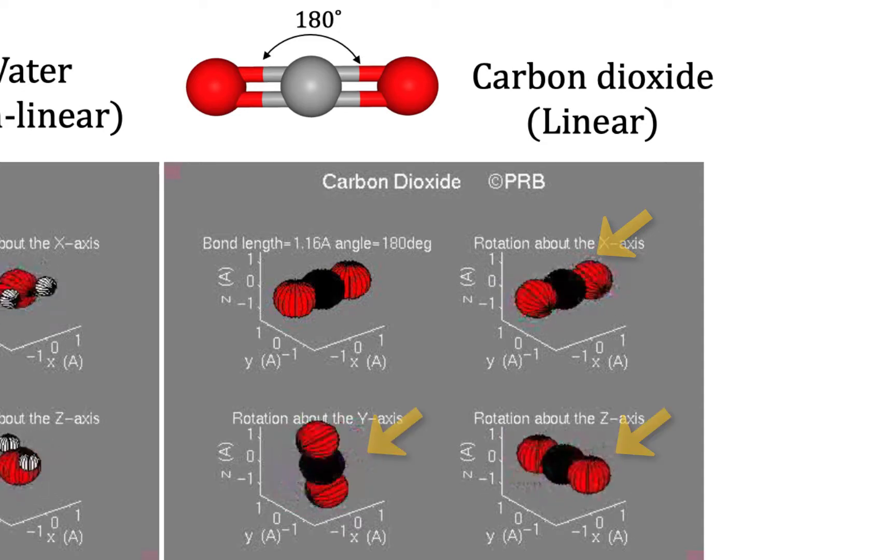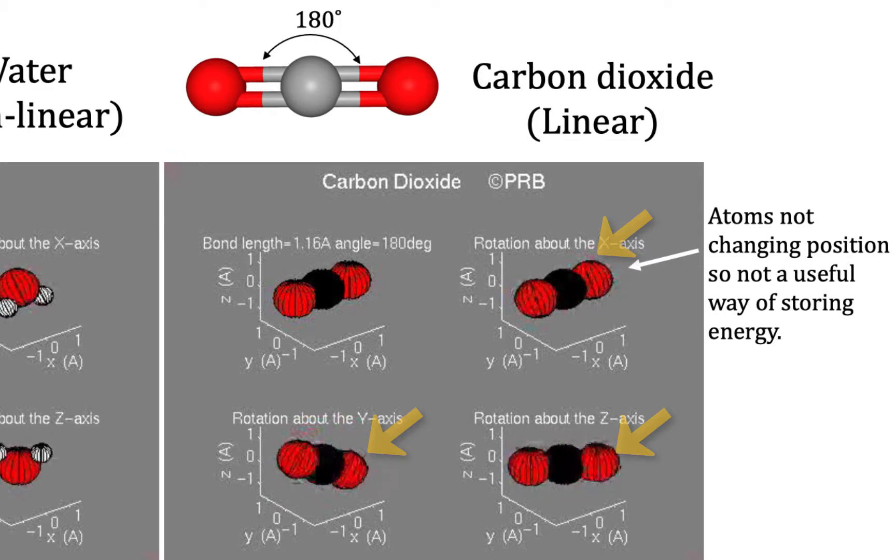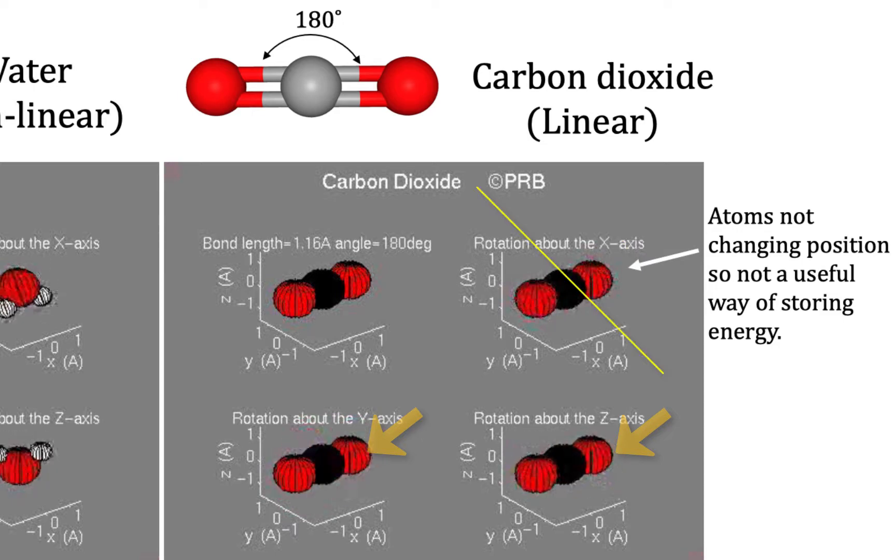However in this case, rotation about the X axis does not change the position of the atoms. So while rotation about the Y and Z axes are both useful for storing energy, rotation about the X axis is not useful for storing energy.